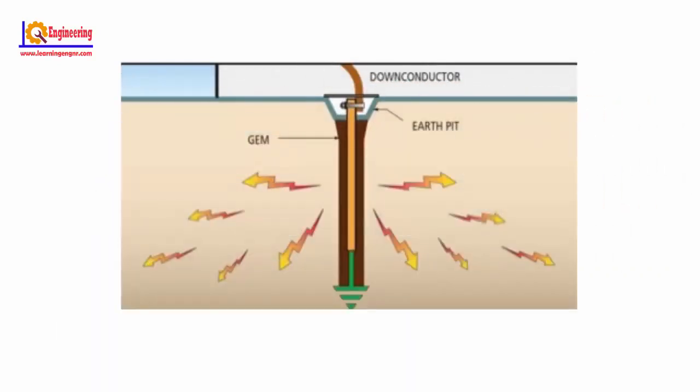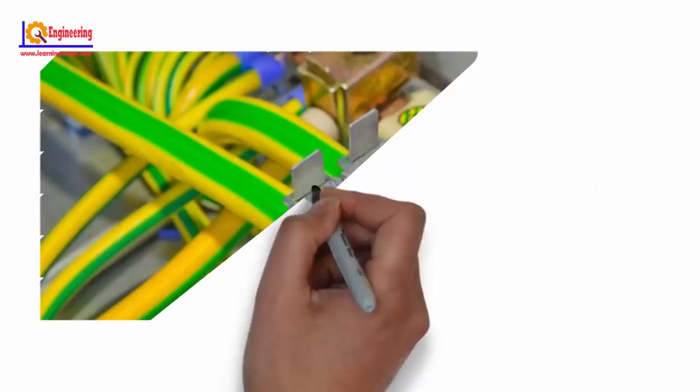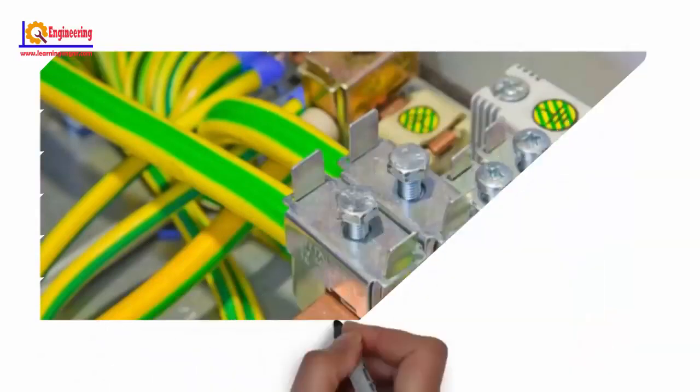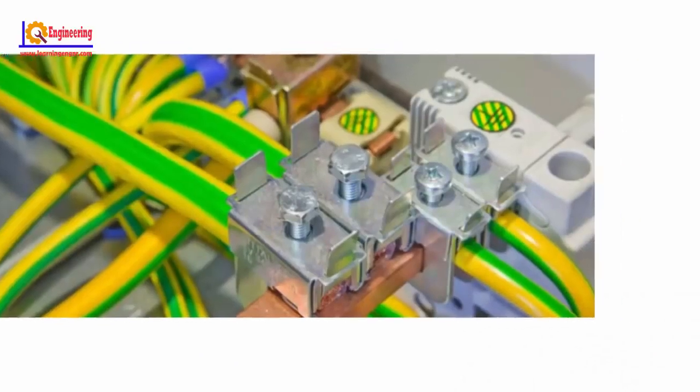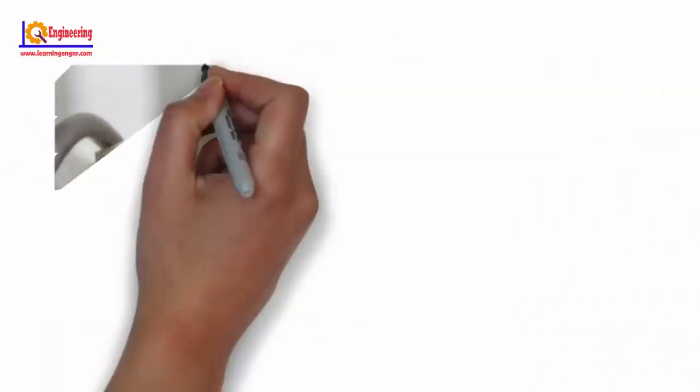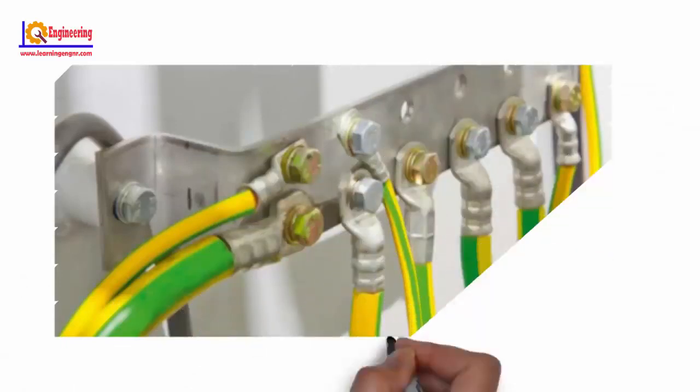The method of connecting non-current carrying parts of electrical equipment or the neutral point of the supply system to the earth through a wire having negligible resistance is called electrical earthing. Earthing protects the electrical equipment from lightning strokes and earth fault conditions. It provides the easiest path for the fault or leakage current to flow through it.